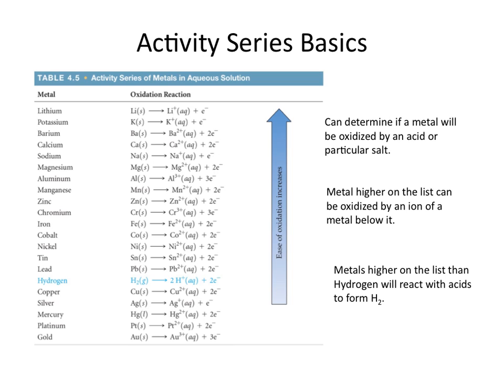And what's neat about the activity series here is that a metal that's higher on the chart is going to be readily oxidized by a metal ion that is below it in the chart. So what does that mean? That means that, for instance, lithium can be oxidized by potassium ion, barium ion, calcium ion, and so forth.